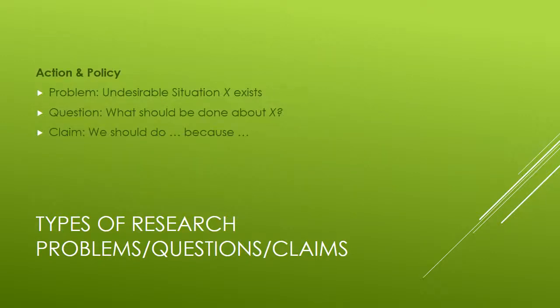Action and policy: this is where we have a problem where an undesirable situation X exists, and the question is what should be done about X — or what shouldn't be done about X. The claim that you make is we should do something, or we should not do something, because blank. This undesirable situation exists; in order to solve it, we should take the following actions because those actions will have specific results to solve the problem. That's the basic structure of an action and policy research project.